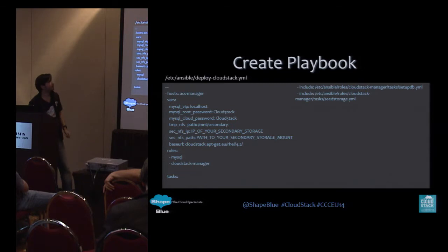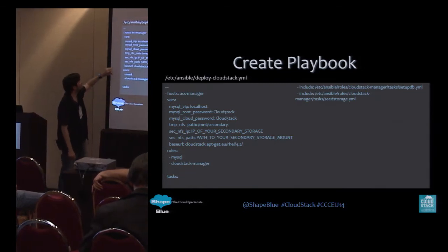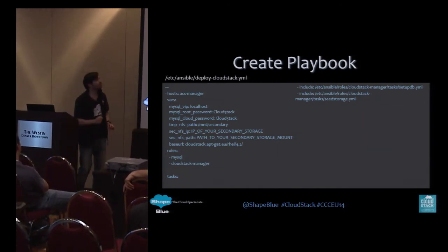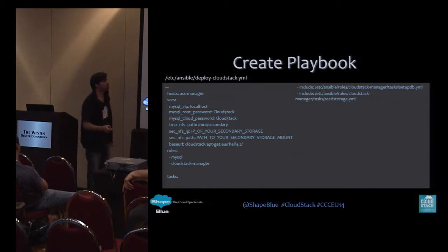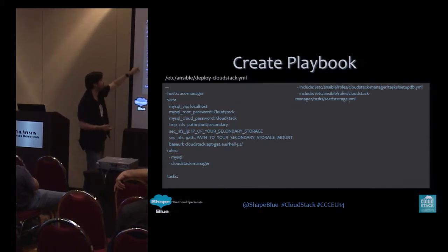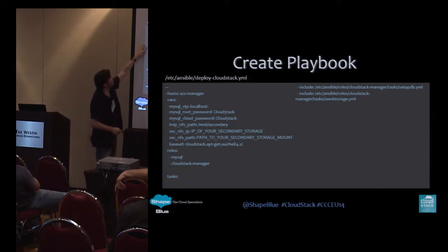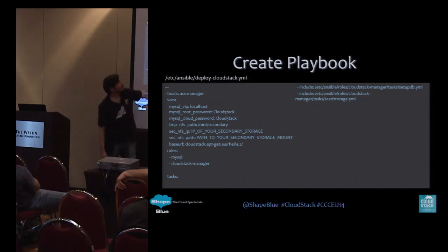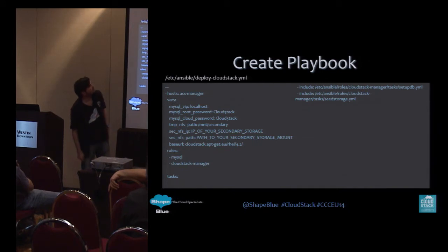Finally, we have the playbook. In this example I brought all the variables into the playbook itself, but you can have host files and group files as separate YAML files which you can call as part of your playbook run. To make this simpler, I've included them here, but you could point to a different inventory with 'playbook -i' and it will do things differently — to different hosts or with different variables depending on how you've configured it. I've set up these variables including the highlighted base URL, assigned the MySQL and CloudStack Manager roles, and included tasks for setting up the database and seeding secondary storage.